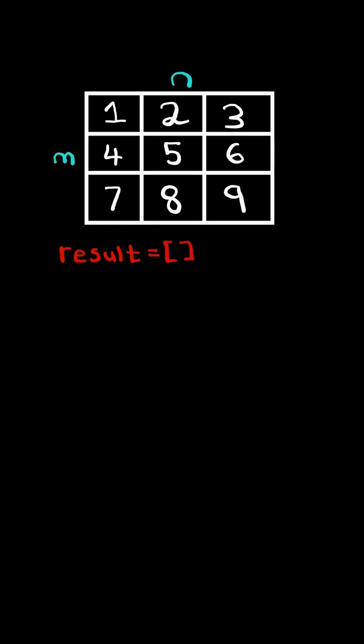First, we will initialize a result array and initialize a flag to true whether we should take the element or skip it. We then iterate through the rows.